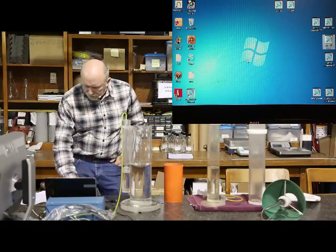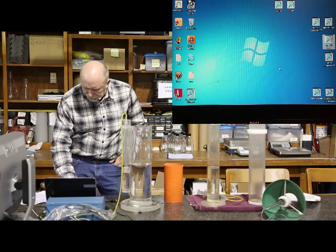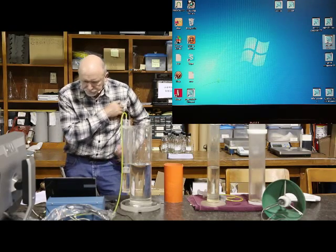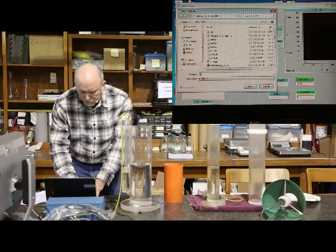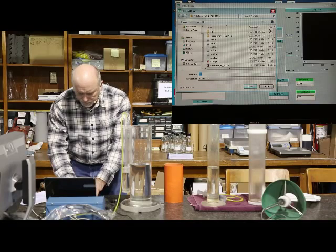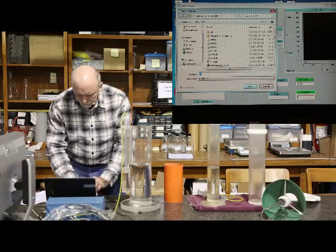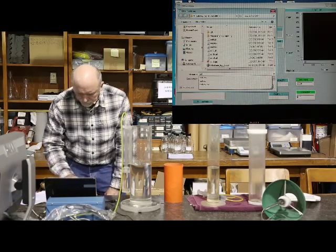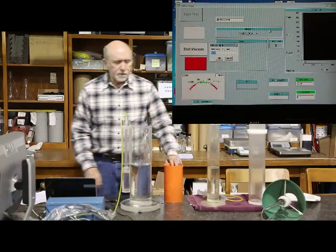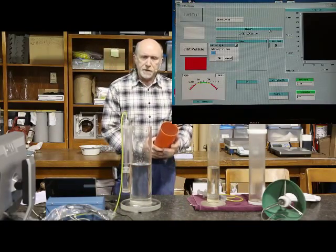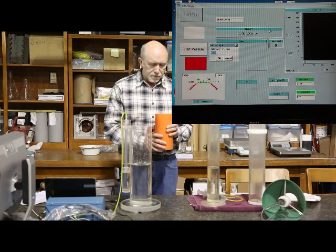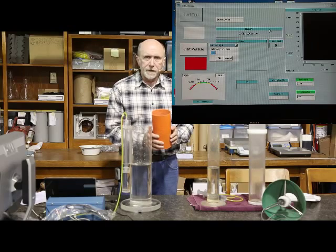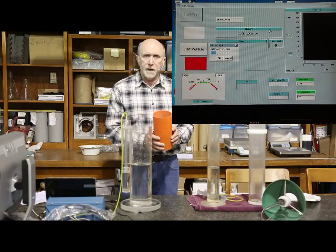I'm going to start the program now. We're going to enter a file name for this particular test, then enter the weight of the sample. We've got an aggregate sample that should be about 1000 grams. We've measured this one out and it's 999.9.